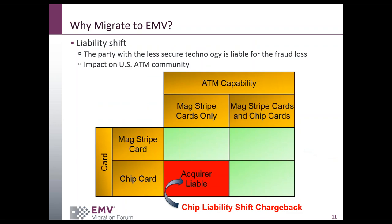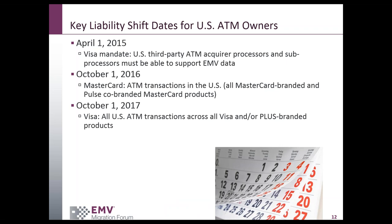Most of you are aware of the payment network liability shifts associated with EMV. Historically, the card issuer has typically borne the losses for counterfeit card fraud, but this will change. With the upcoming EMV liability shifts, liability for counterfeit card fraud will shift to the party that uses the less secure technology — the non-EMV compliant party. If a chip card is presented at a terminal that is not chip-enabled and the transaction is later determined to be counterfeit card fraud, the acquirer and non-EMV ATM terminal owner will be liable.